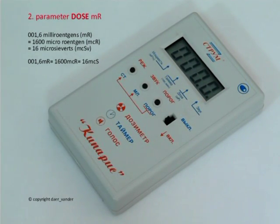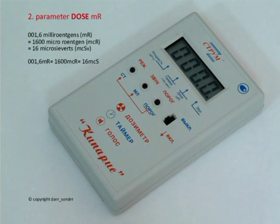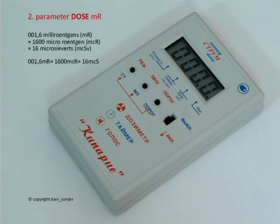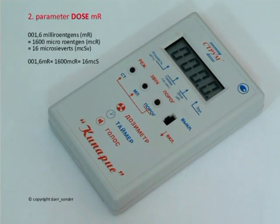Parameter Dose displays the accumulated body dose of radiation starting from the moment of switching on the device. It is useful when you need to be in a place where the level of background radiation exceeds the norm, as an organism can rather quickly accumulate a dangerous quantity of radiation. Therefore, it is important to monitor the accumulated dose.